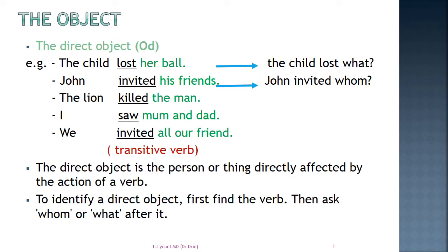Her ball is directly affected by the action of the verb 'to lose'. We take the second example in the same way. John invited his friends. How can I find the direct object? First, I look at the verb, which is always transitive. John invited whom? He invited his friends. His friends is the direct object.